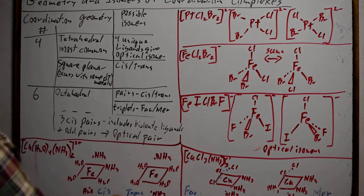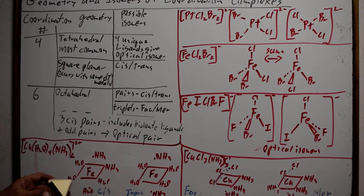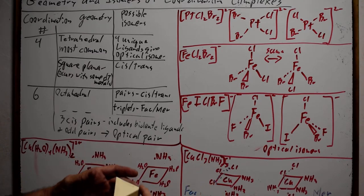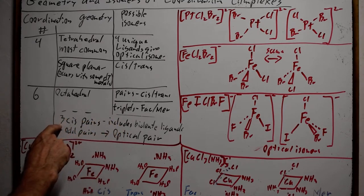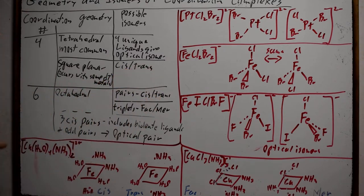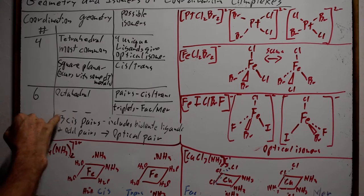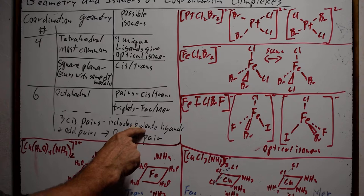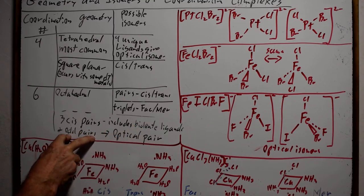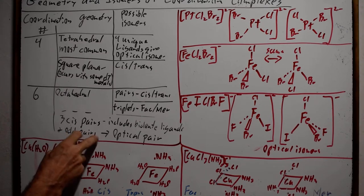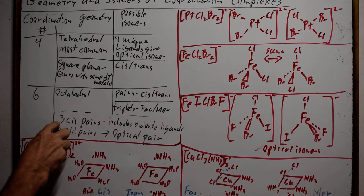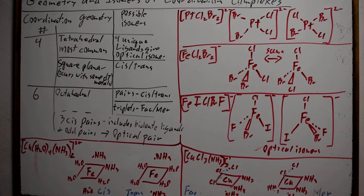Where we have pairs, that is cis-trans — cis being two adjacent positions, trans having only one possible trans position. When we have three cis pairs — and this will include bidentate ligands and odd pairs — three cis pairs gives us optical isomers, again a pair of optical isomers.